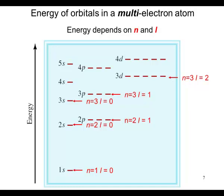3s, n equal three, l equals zero. 3p, n equal three, l equals one. And 3d, n equal three, l equal two.